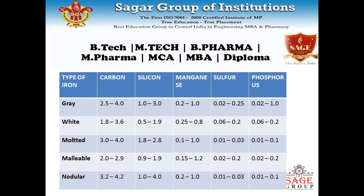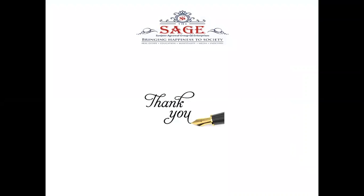According to the composition of carbon and other elements, these cast irons have different mechanical properties like malleability, brittleness, strength, and corrosion resistance. Today we discussed the introduction of cast iron, its different types, their compositions, properties, and uses. Thank you.